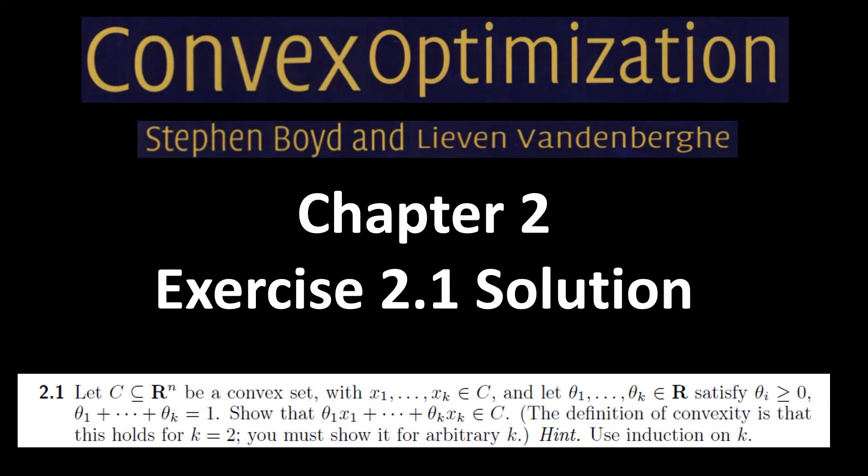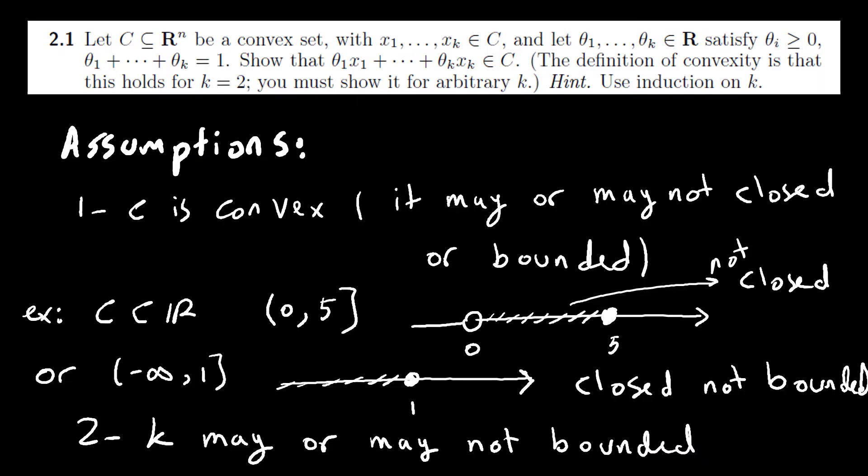Hello, this is the first video of solution to convex optimization book and I'm going to start from the first exercise on chapter 2. Let's see what the problem is. We have a set C here. This set C is convex, so from this set we are going to choose k points and we have k coefficients, each one is non-negative and the sum of all these coefficients is 1. So the claim is the convex combination of these points is back in C.